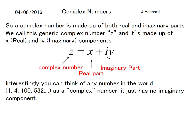Interestingly, you can think of any number in the world, like 532, as a complex number. It's just got no imaginary part. If we cover up the imaginary part, we're just left with the real part: z = 532 plus no i, which is a real number.